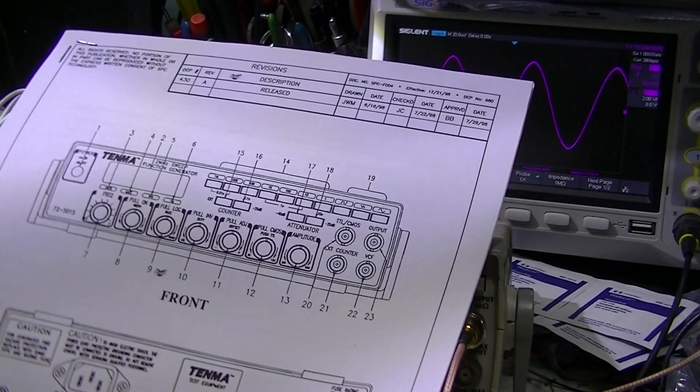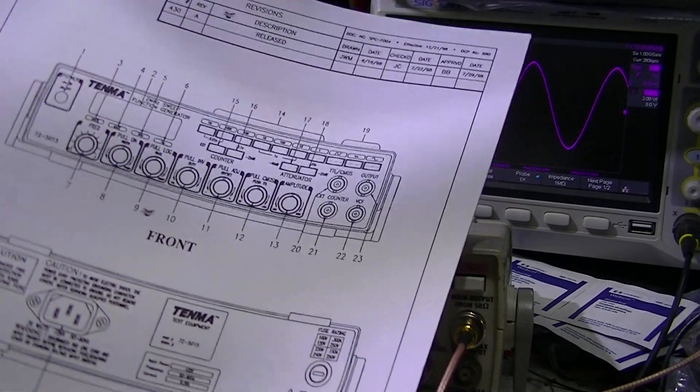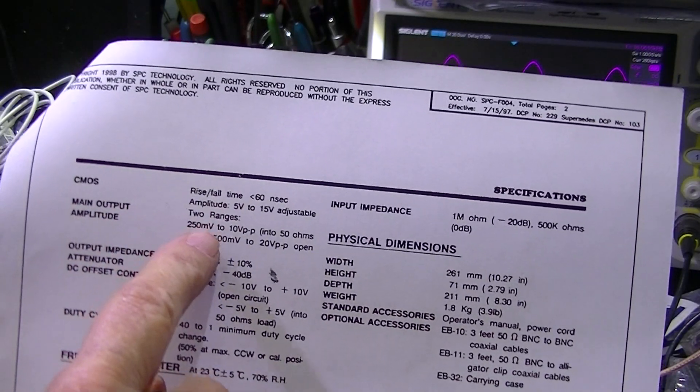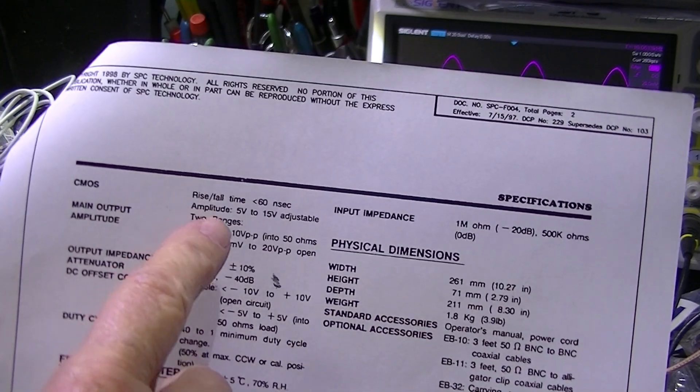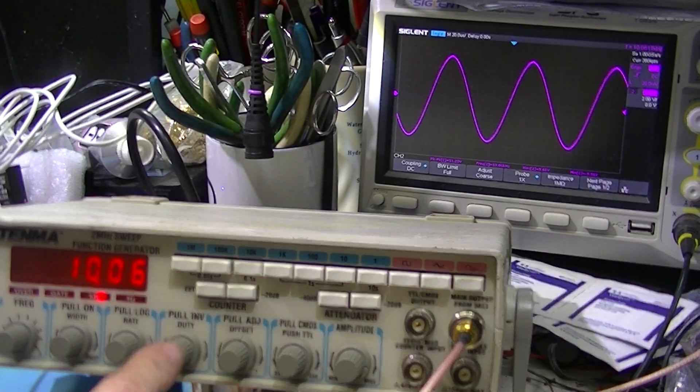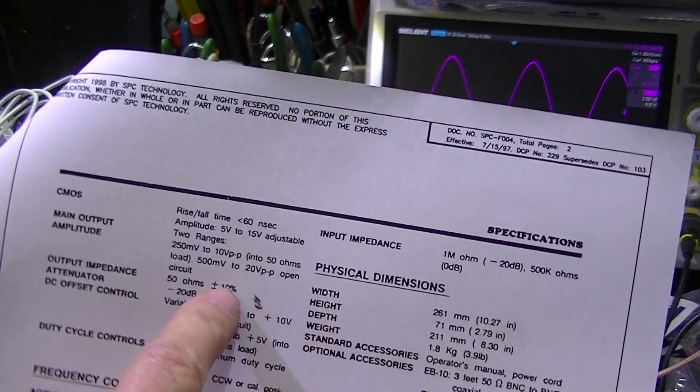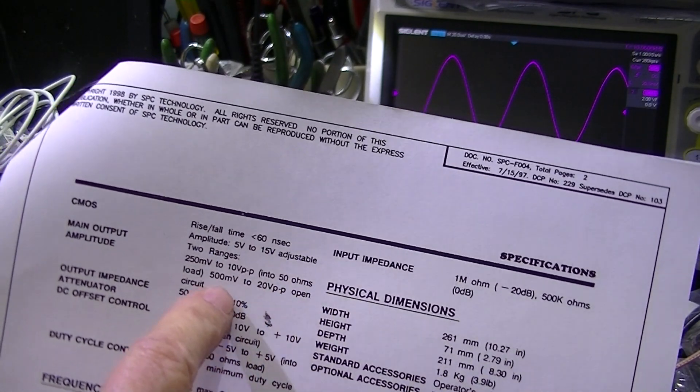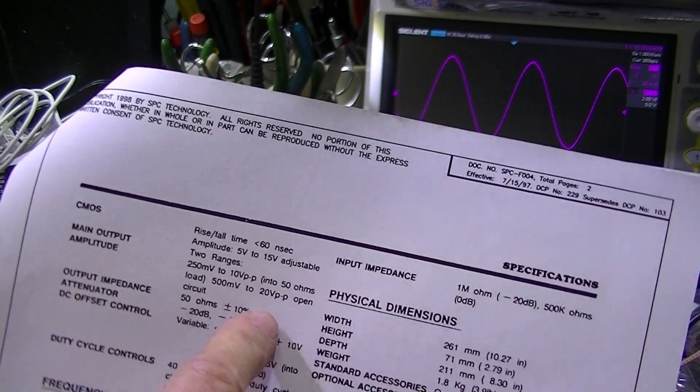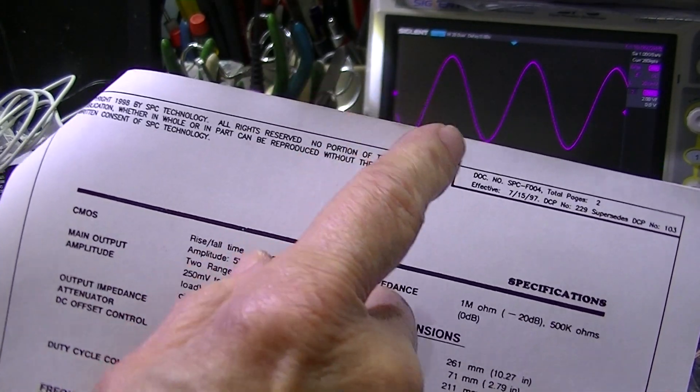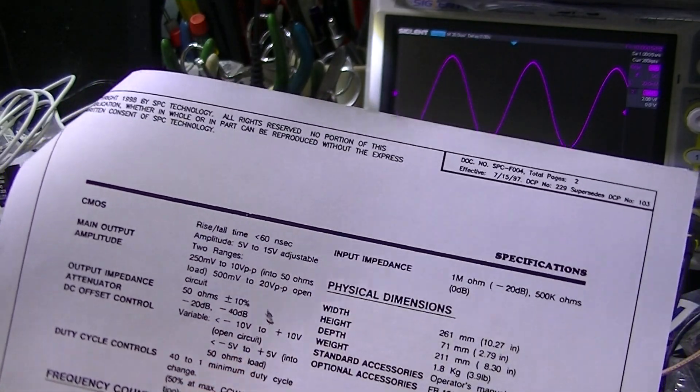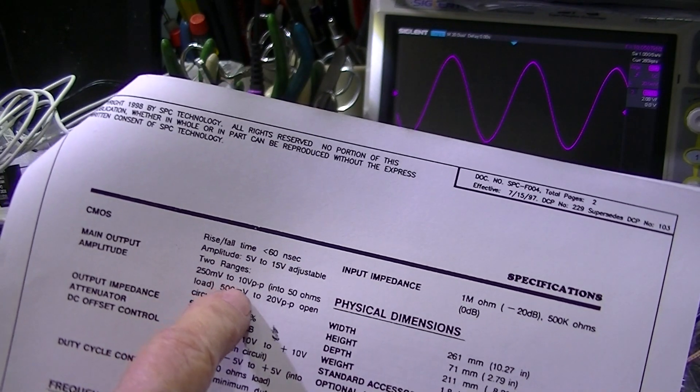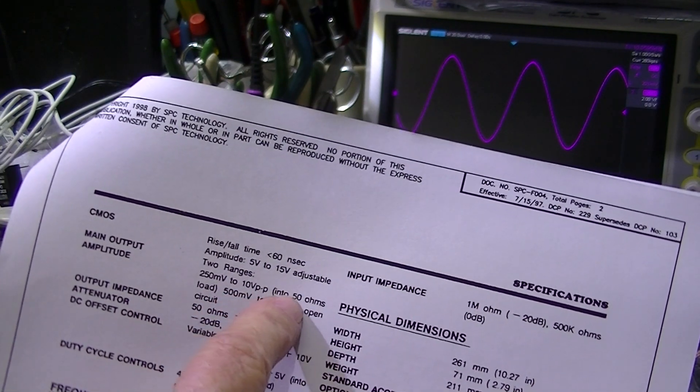I do, however, have a four-page Tenma publication. So Tenma lists two ranges for the main output amplitude. There are not two range switches here. What they're referring to is into 50 ohms or into an open circuit. So I've got a 50 ohm terminator on the oscilloscope. So actually we're going to be on this lower voltage range, which is 250 millivolts to 10 volts into 50 ohms.